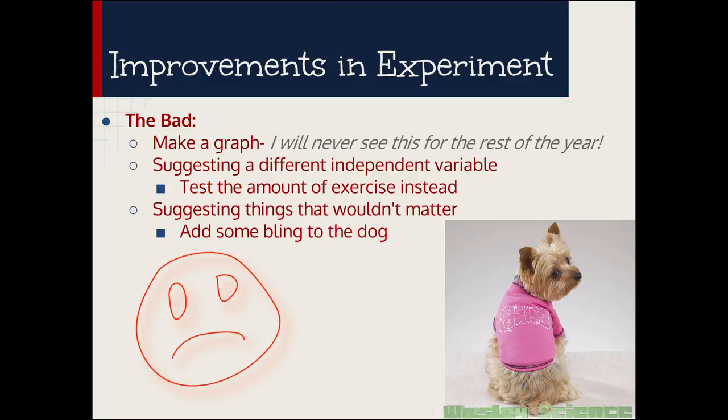This one drives me crazy. Kids say, make a graph. How does making a graph improve your lab? It doesn't do anything for your lab. It just adds color and flair. It's not necessary to make your lab a better lab. Second one, suggesting a different independent variable, like test the amount of exercise instead. Why would you have that for improvement of your lab? That could be a further investigation, but I'm not having you do that. That doesn't make your lab better by telling them to do a different independent variable. And then another one, suggesting things that wouldn't really matter, like adding some bling to your dog that's not going to help your dog lose weight.